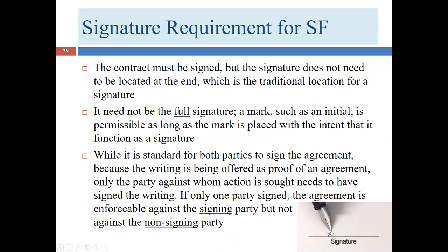The signature doesn't have to appear at the end of the contract and doesn't have to be a full signature. It can be initials, or even just a mark — if someone can't write due to a broken arm, illiteracy, or severe arthritis — as long as it's intended to function as a signature. If only one person signs, only that person can be the defendant. When the plaintiff signs but the defendant doesn't, the plaintiff will be out of luck relying on the statute of frauds.